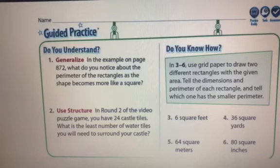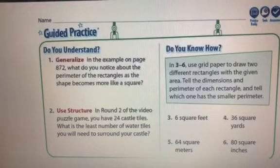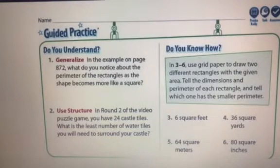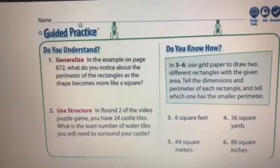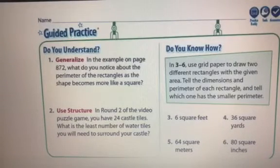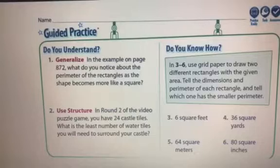When the shape becomes more like a square, the perimeter will decrease and the area will increase. Okay, perimeter will decrease and the area will increase.